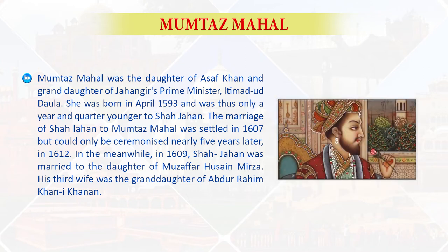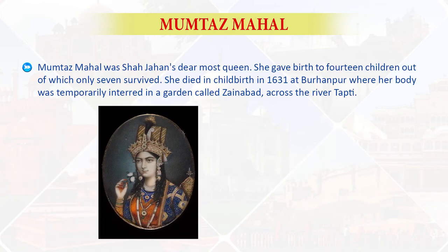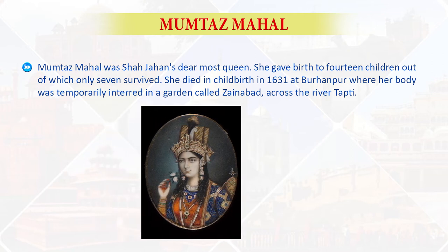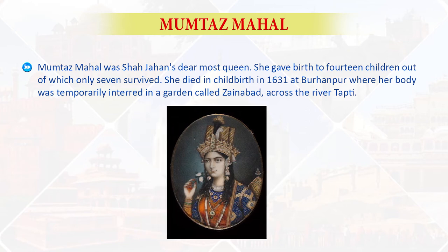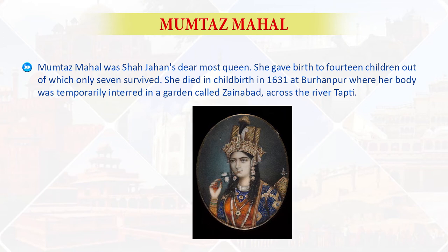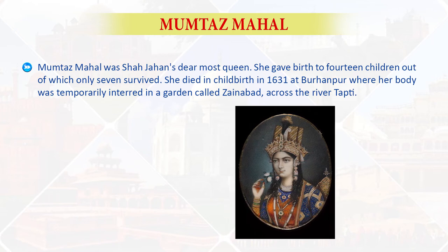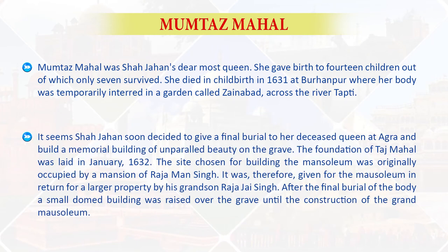In the meanwhile, in 1609, Shah Jahan was married to the daughter of Muzaffar Hussain Mirza. His third wife was the granddaughter of Abdur Rahim Khan-i-Khanan. Mumtaz Mahal was Shah Jahan's dearest queen. She gave birth to 14 children, out of which only 7 survived. She died in childbirth in 1631 at Burhanpur, where her body was temporarily interred in a garden called Zainabad, across the river Tapti. It seems Shah Jahan soon decided to give a final burial to his deceased queen at Agra and build a memorial building of unparalleled beauty on the grave.